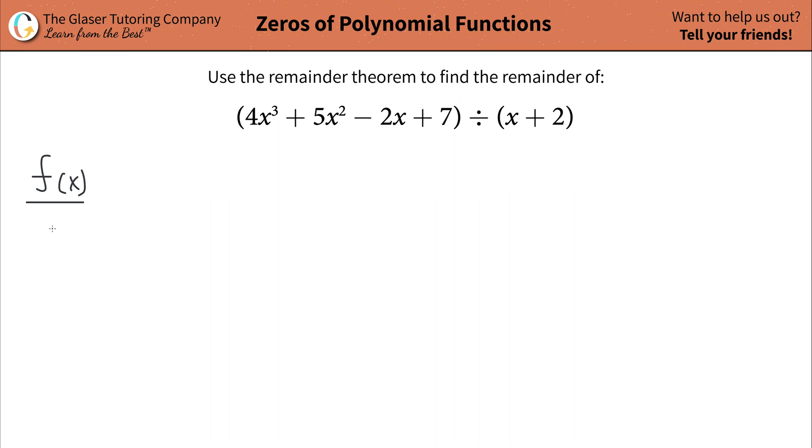divided by some linear function x minus k, it has to be in this kind of form. Whenever you have this, the remainder of this division will be equal to the function's value evaluated at k.